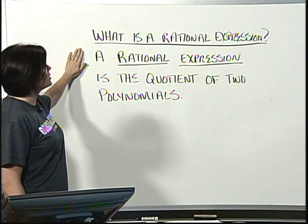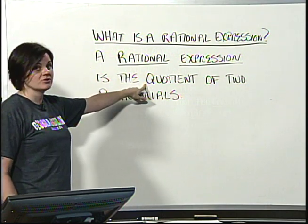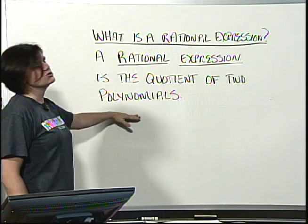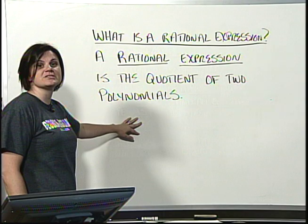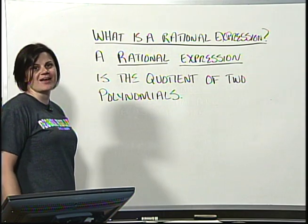Well, a rational expression is the quotient or division of two polynomials. Let's take a look at some examples to see if we can better understand this definition.